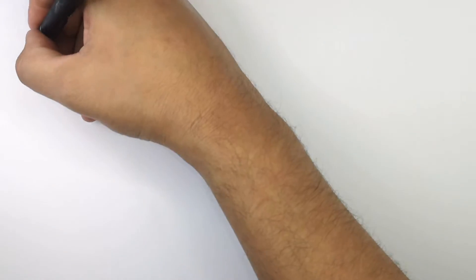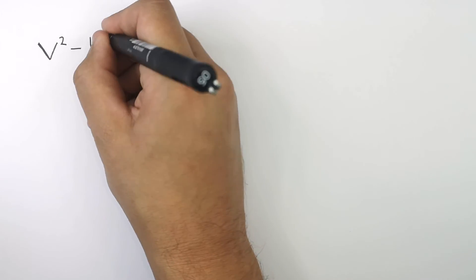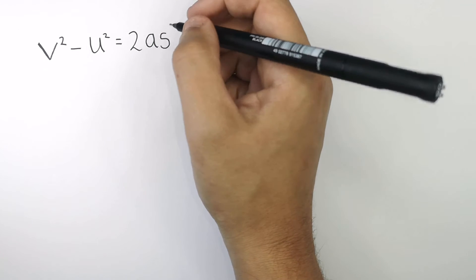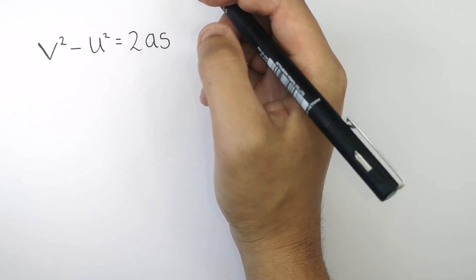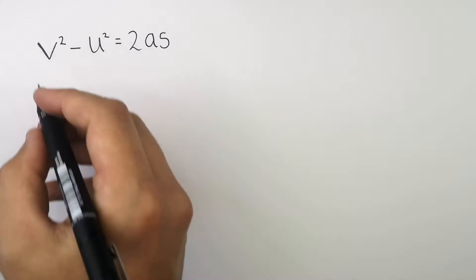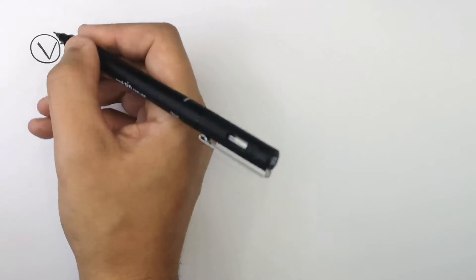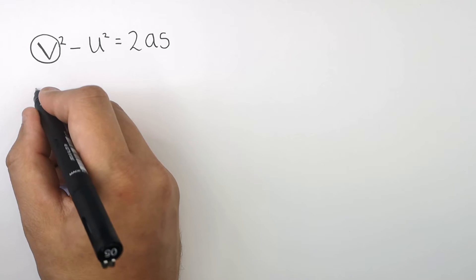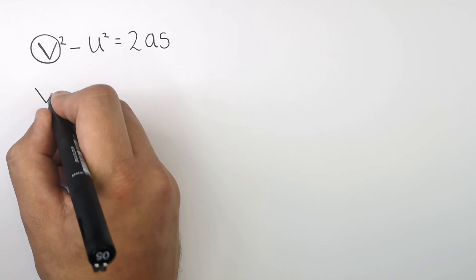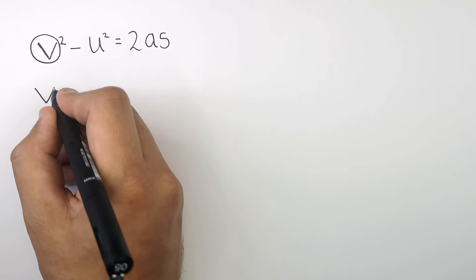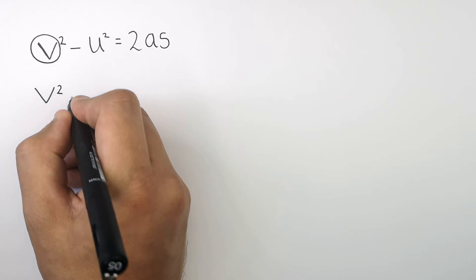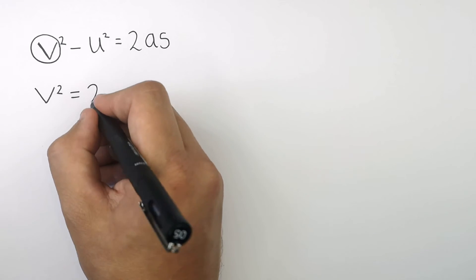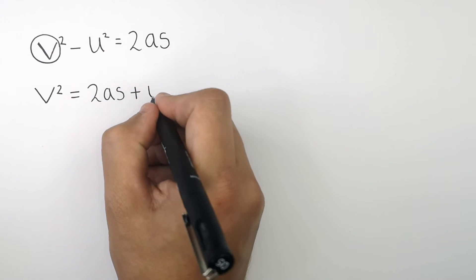We're now going to learn how to rearrange the equation V-squared minus U-squared equals 2AS into the subjects V, A, or S. So to rearrange for V, you circle V. Because it's V-squared minus U-squared, to move the U-squared to the other side of the formula, to leave V-squared equals, you must add U-squared to 2AS.